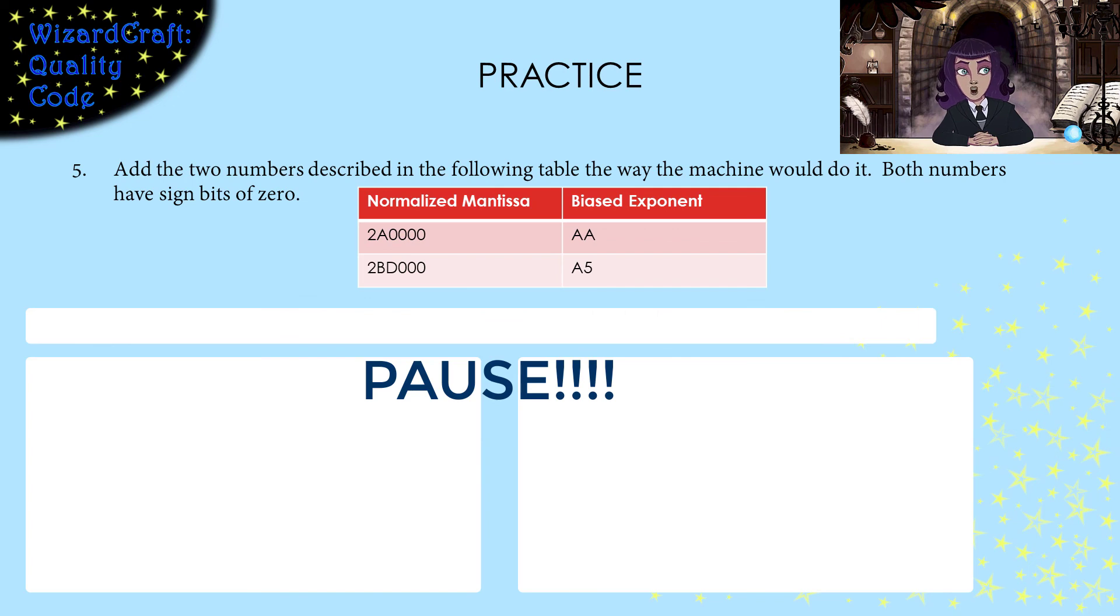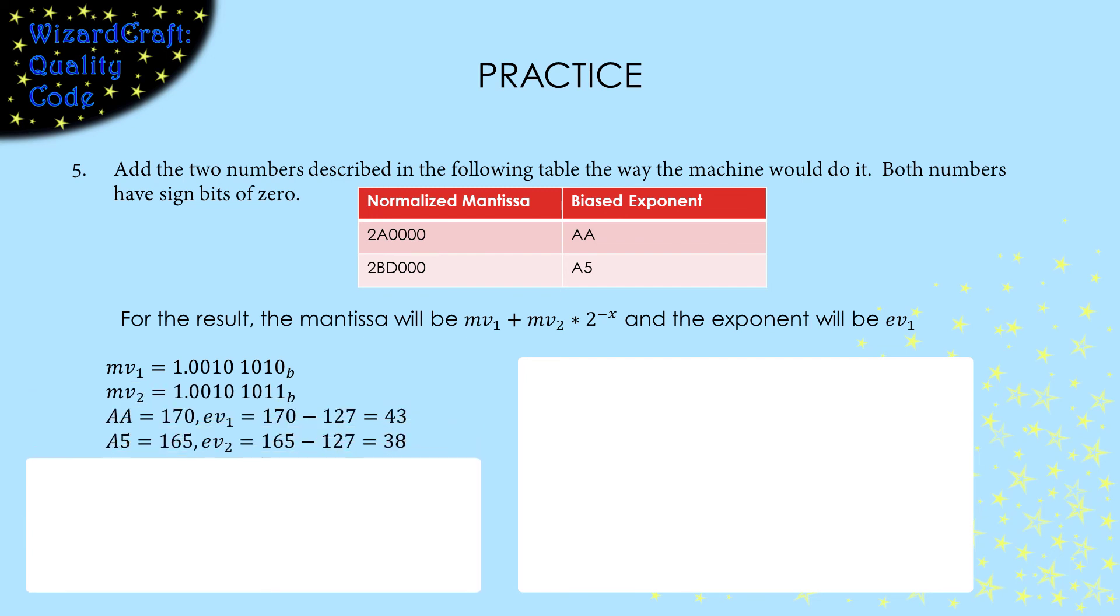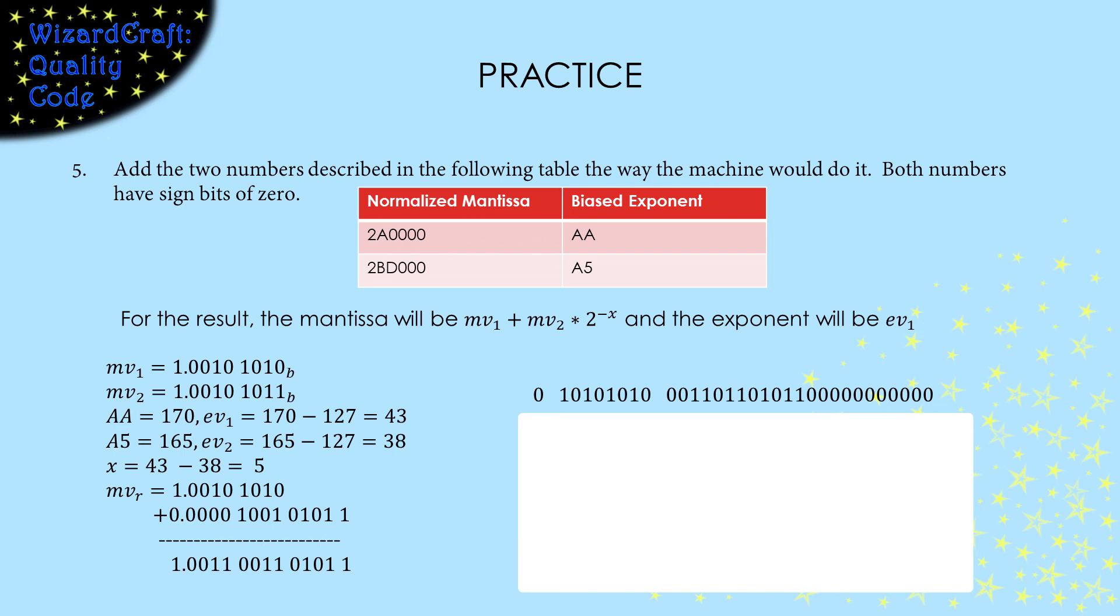Your turn. Same numbers as the multiplication practice. First, remember the rules. Since these are the same numbers we used for the multiplication practice, I copied our calculations of the mantissa and the exponent values here, even though we don't need the unbiased exponents. X is 5. Shift the decimal point of the second mantissa value and add them. For this one, the numbers are way too big to find their values. I'm just going to give the result in IEEE 754 format. Sign bit of zero. Exponent from the first operand. And normalize the mantissa we calculated. Group into bytes. Convert to hex to be human readable. Done.